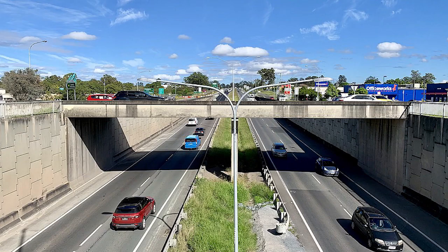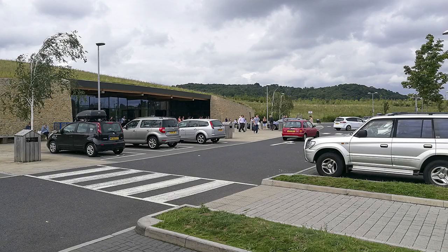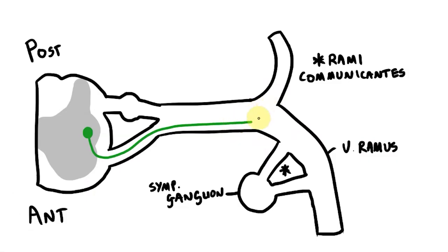Have you ever been on a long car journey when someone suddenly needs a wee, so you have to leave the motorway, head down a slip road and find the nearest services? Well, that's kind of what happens here. Our efferent fibres travelling along the ramus suddenly turn and head down this small branch towards the ganglion.